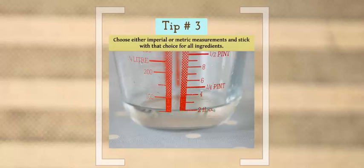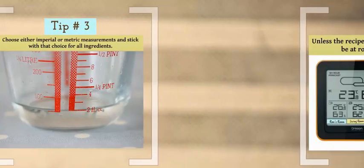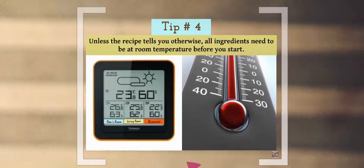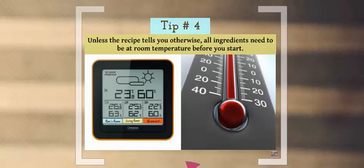My fourth tip: unless the recipe tells you otherwise, all ingredients need to be at room temperature before you start. The chemistry comes in again here - ingredients like butter and eggs need to emulsify in the cake batter, and this won't happen properly if they're too cold.